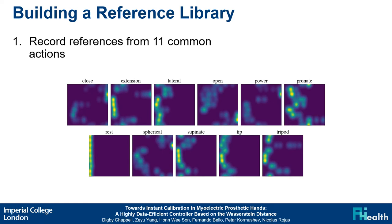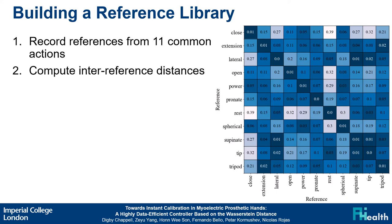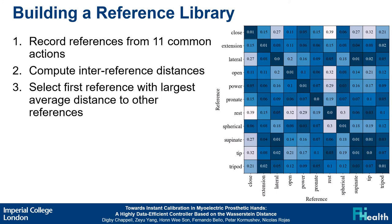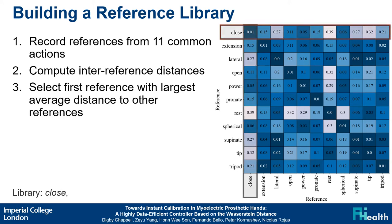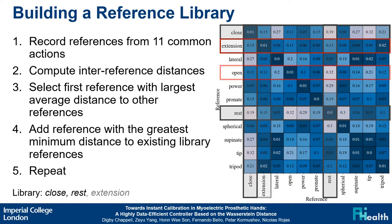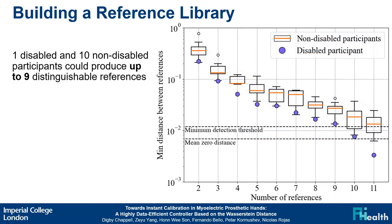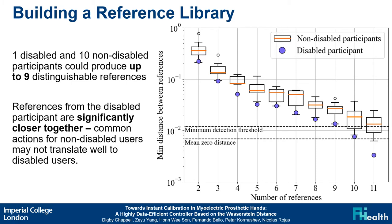To explore building a reference library, we recorded references from 11 common actions, then computed the Wasserstein distance between each of the references. The first reference in the library is selected as the one with the largest average distance to other references. The next reference to be added is selected as the one with the greatest minimum distance to references already in the library. This is repeated until the library is complete. We found that one disabled and ten non-disabled participants could produce up to nine distinguishable references. References from the disabled participant are significantly closer together, highlighting that common actions for non-disabled users may not translate well to disabled users.